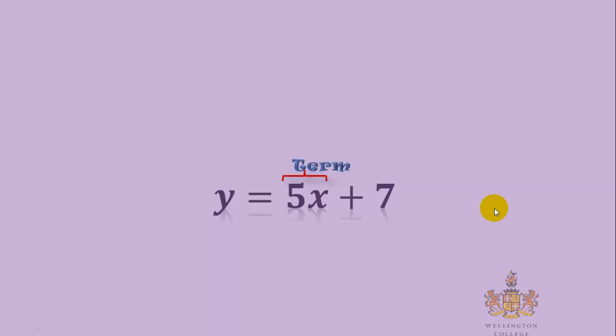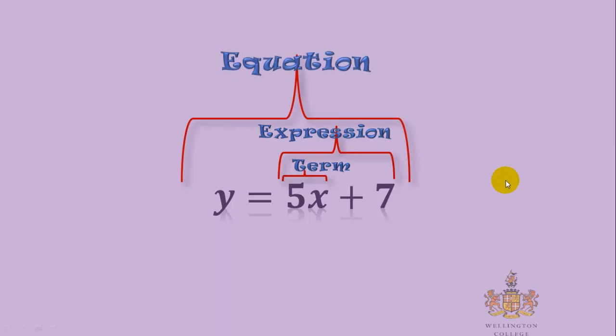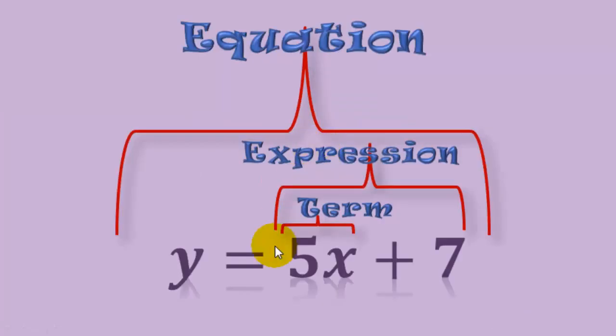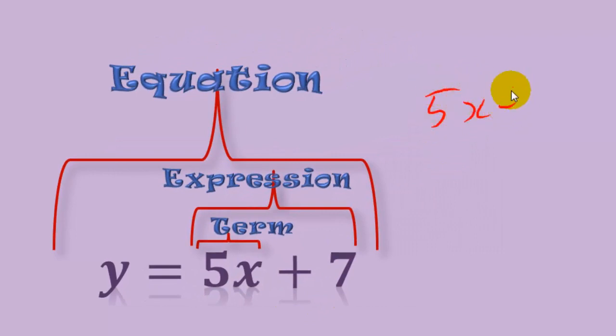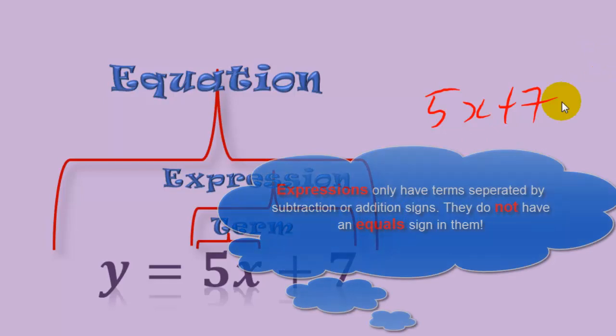We have the term, expression, and equation. Now, it's very important you understand the difference between an equation and an expression. The expression we're going to look at here is just the 5x plus the 7. Notice there's no equal sign in this. And that gives you your expression. There is no equal sign in any expression.